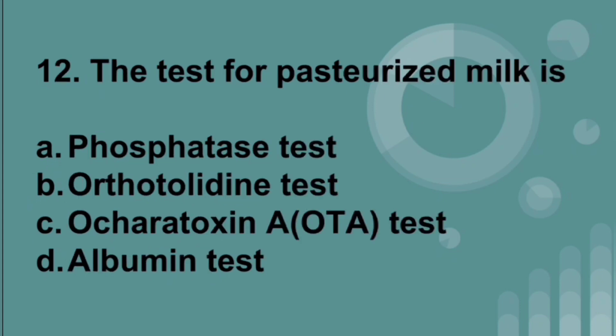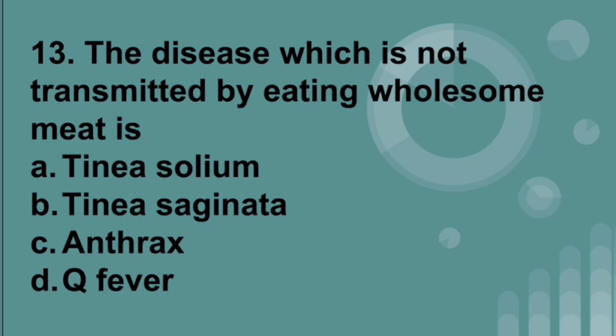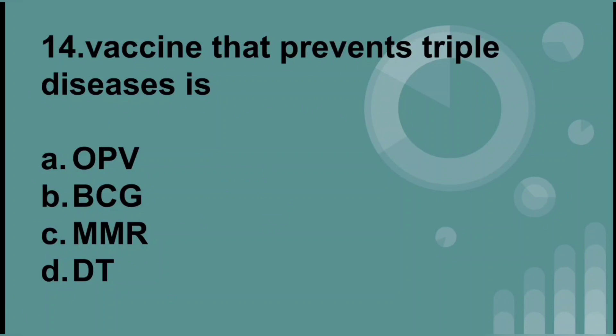The test for pasteurization of milk is called the phosphatase test. The disease which is not transmitted by eating wholesome meat is Q fever. Q fever is caused by Coxiella burnetii. The vaccine that prevents triple disease is MMR — mumps, measles, and rubella.